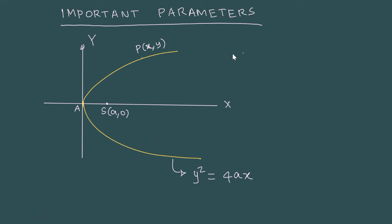The first parameter we should keep in mind is the focal distance. It is very obvious by the name itself - focal distance is the distance of a point from the focus. This is our SP.